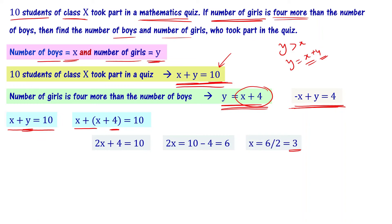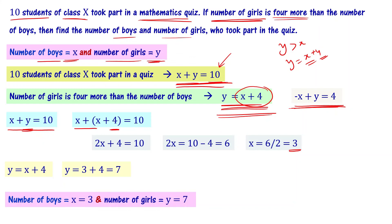Now we have to find the y value. Since y equals x plus 4, we substitute x equals 3, giving us y equals 3 plus 4, which equals 7. So the number of boys x equals 3 and the number of girls y equals 7.